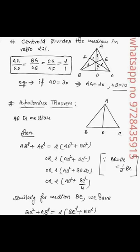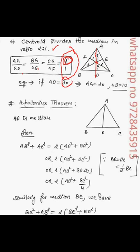Hello and welcome to online math coaching. Today we will discuss a very important concept on centroid. As already discussed, the centroid divides the median in the ratio 2:1, where the two parts are towards the vertex. So AG:GD = BG:GE = CG:GF = 2:1. For example, if the median length is 30, then AG will be 20 and GD will be 10.